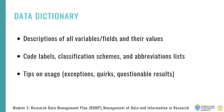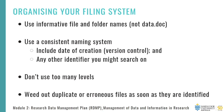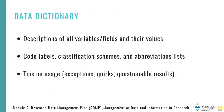Documenting this information is sometimes referred to as a data dictionary and would include descriptions of variables or fields and their value, code labels, classification schemes, and abbreviation lists, tips on usage, things like exceptions, quirks, and questionable results. The data dictionary should then accompany your data and your research information wherever it goes, and be updated whenever your research information is updated.